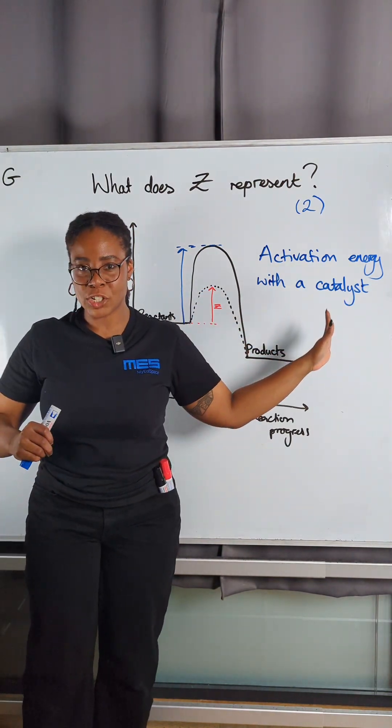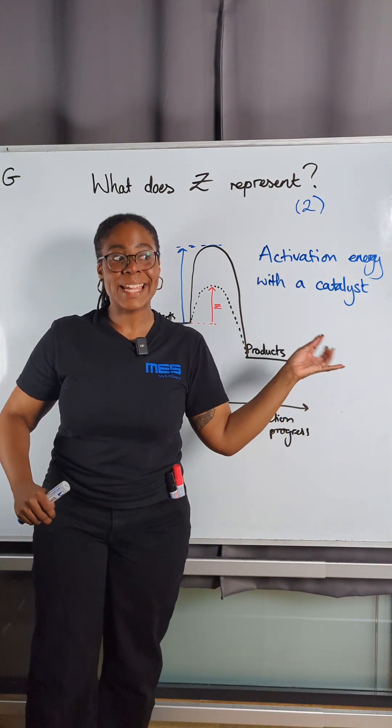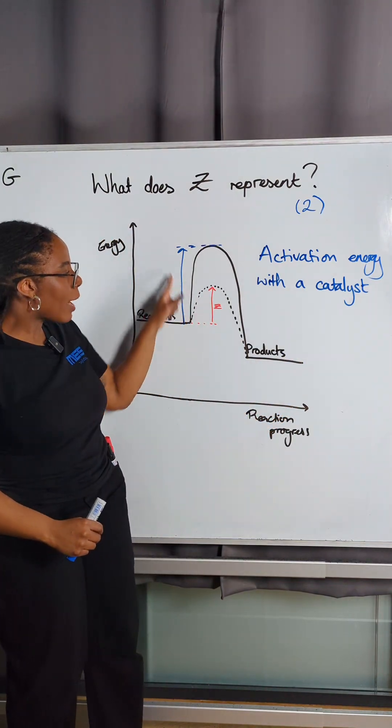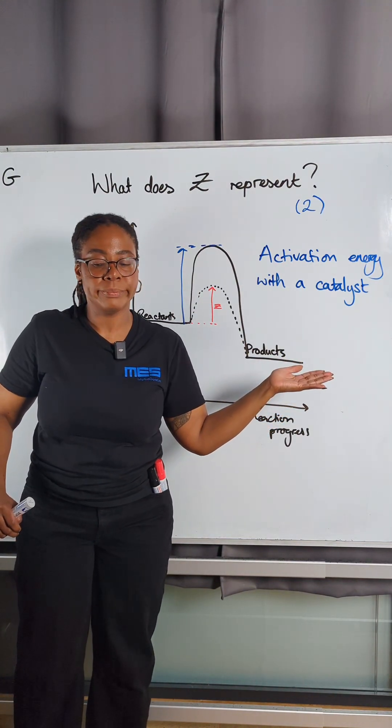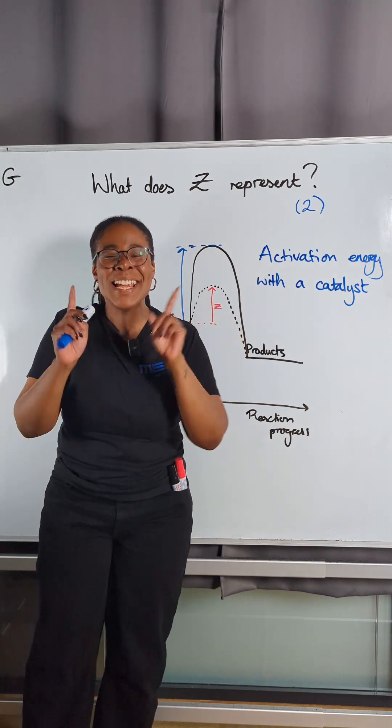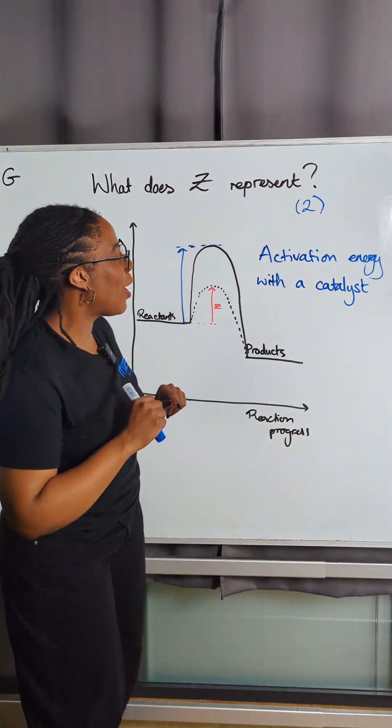So by showing an activation energy that is lower, that is our activation energy when we are using a catalyst, whereas this blue arrow would be the activation energy with no catalyst. Yay, nice and straightforward!